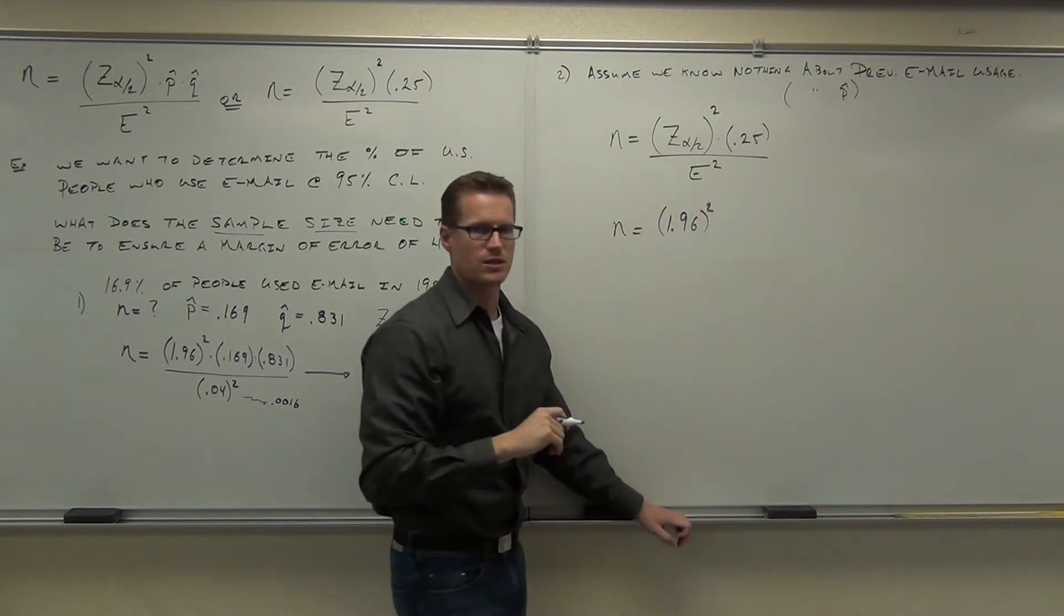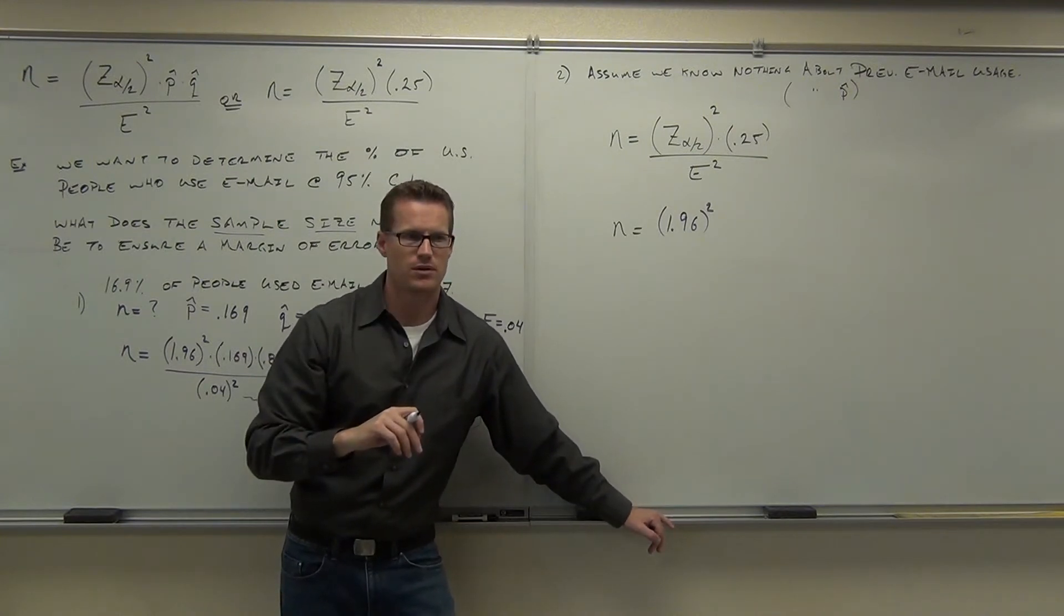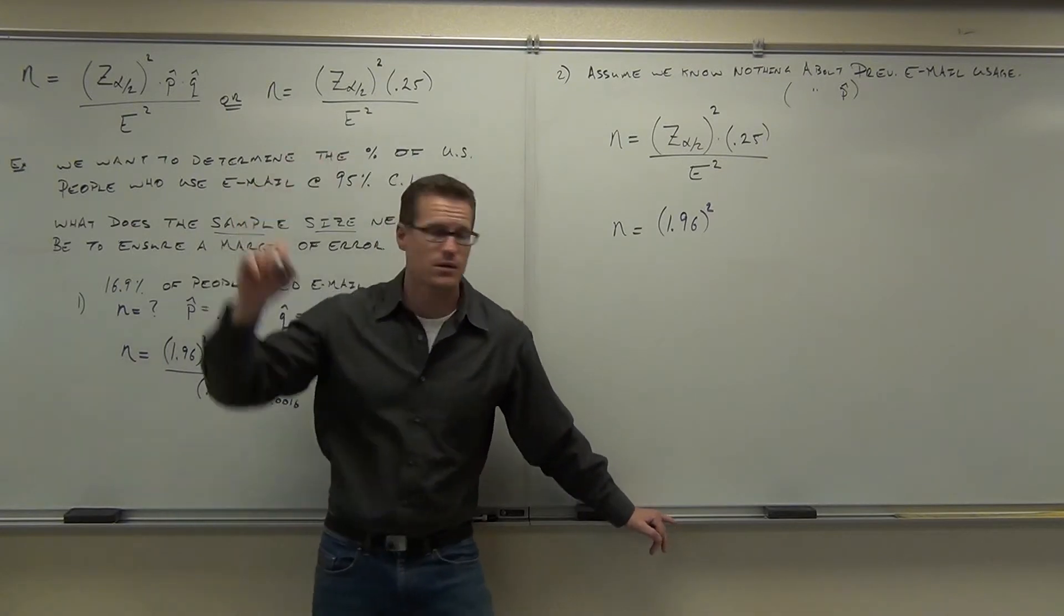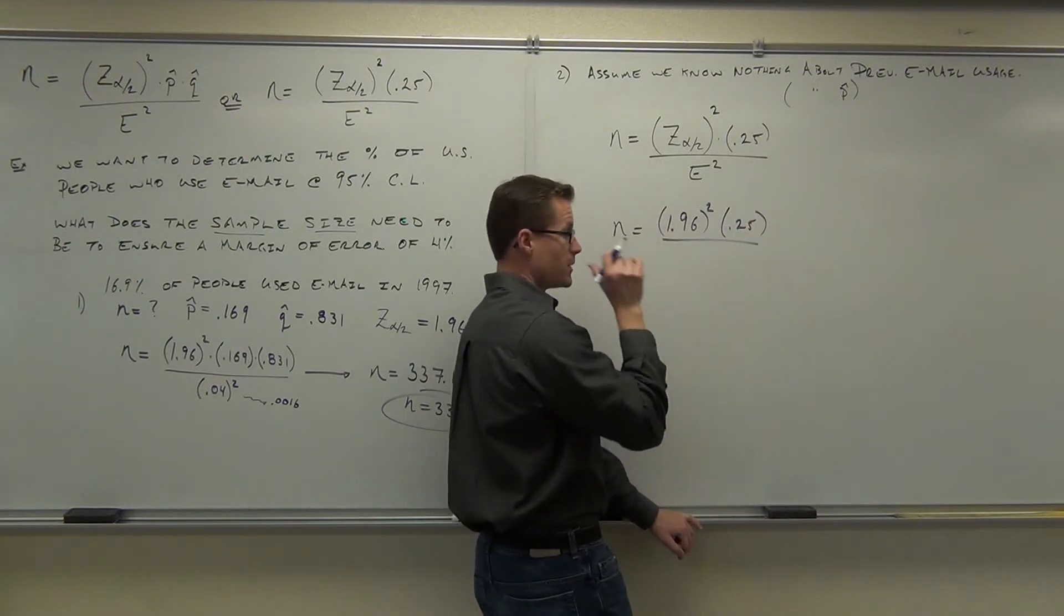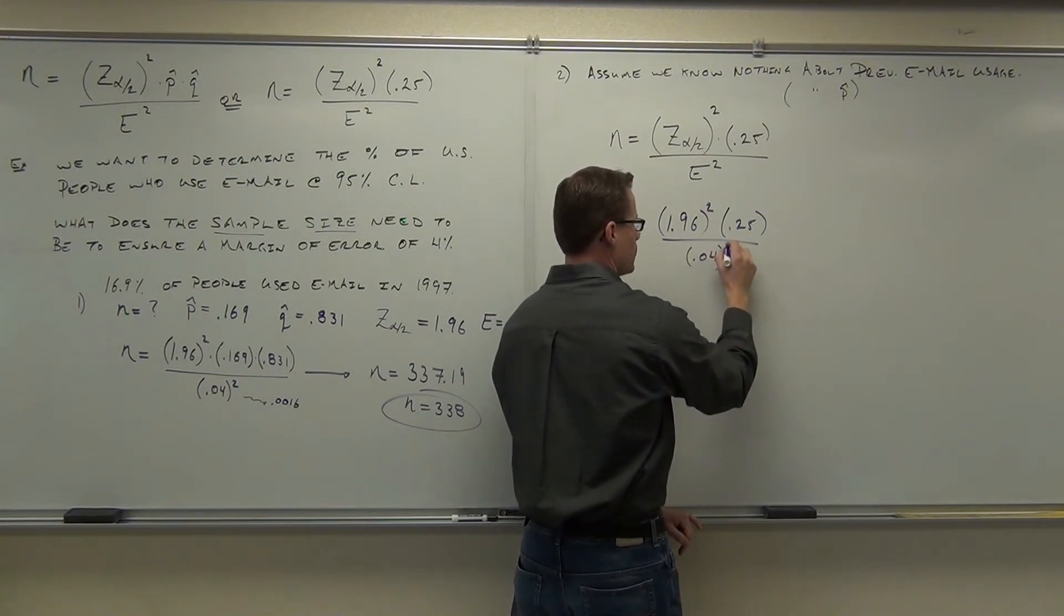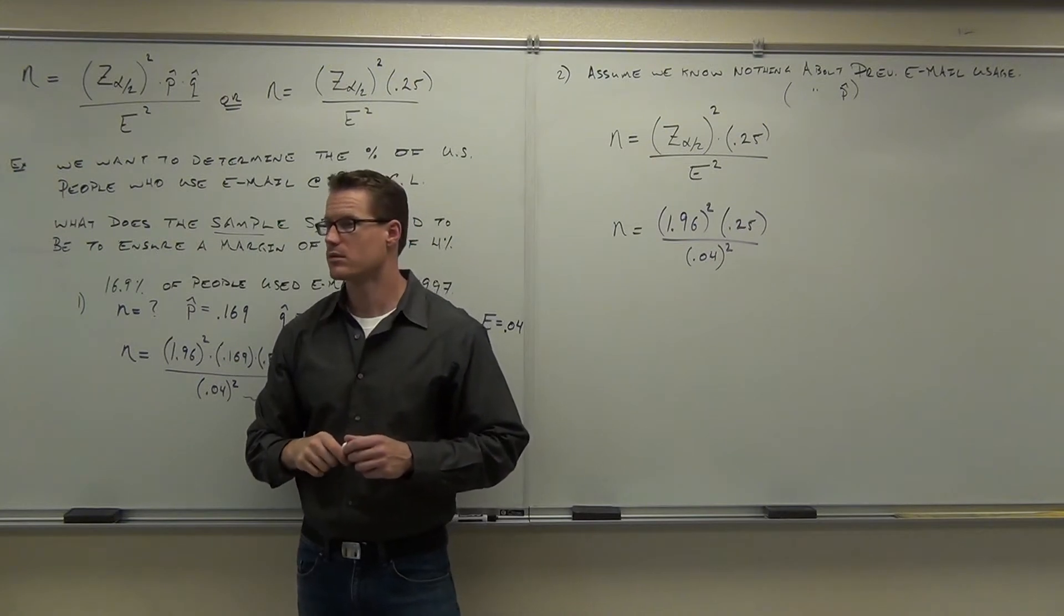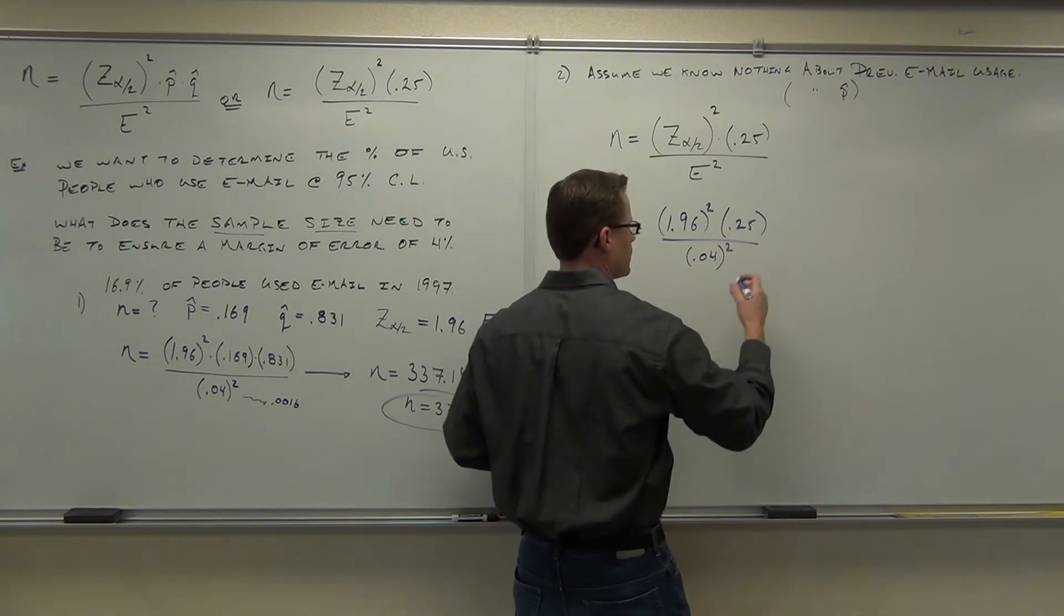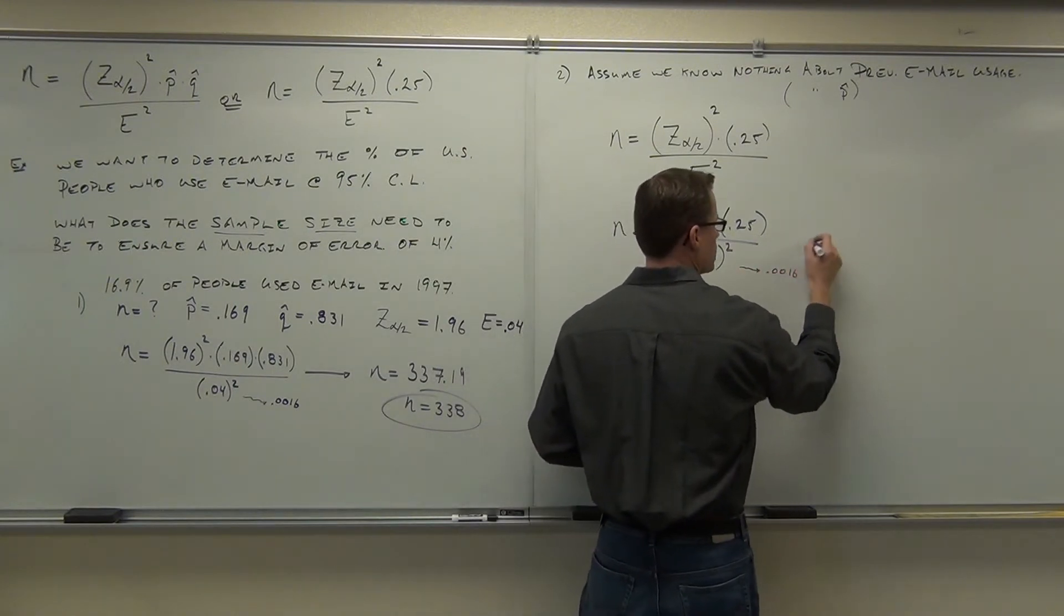What do I plug in for p-hat and q-hat? 0.25 each or just 0.25? Just 0.25 because that's what it says there. And over how much? 0.04. Sure, because that's still our E. We still want that. Do you think our sample size is going to go up or down?